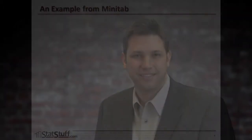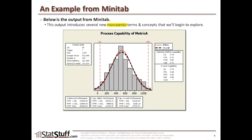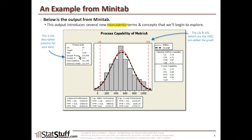Now let's look at an example of capability analysis output created by Minitab. I want to highlight several terms and concepts in this output that we'll be reviewing later in this lesson. The lower spec limit and upper spec limit that we identified in the dialog box now appear in the graph, referring to the voice of the customer requirements. These are also displayed in the left-hand section, which includes descriptive statistics — the lower and upper spec limits, the mean, standard deviation, and number of samples.